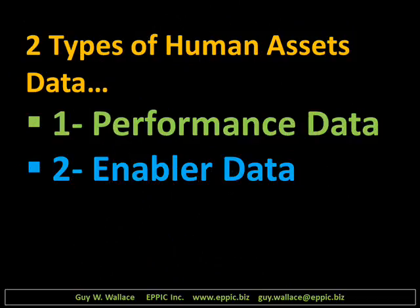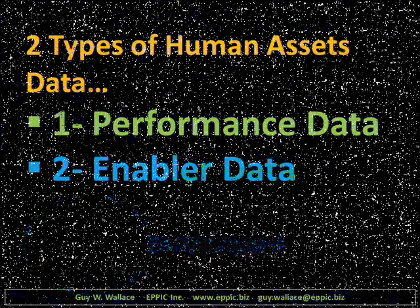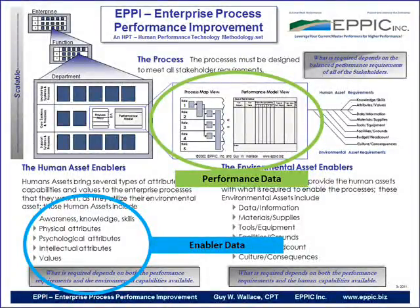The two types of human asset data include the performance data and the enabler data. We've talked about the process maps and performance model views so that we understand what the process is that must be enabled. And we've looked at the enabler data: awareness, knowledge and skills, physical, psychological, intellectual attributes, and personal values.